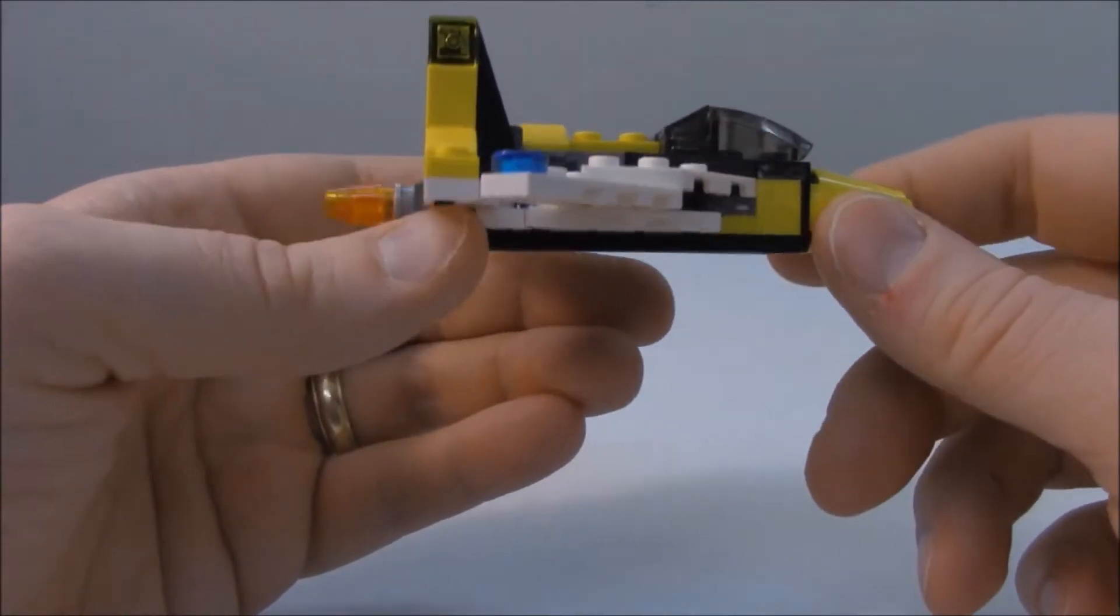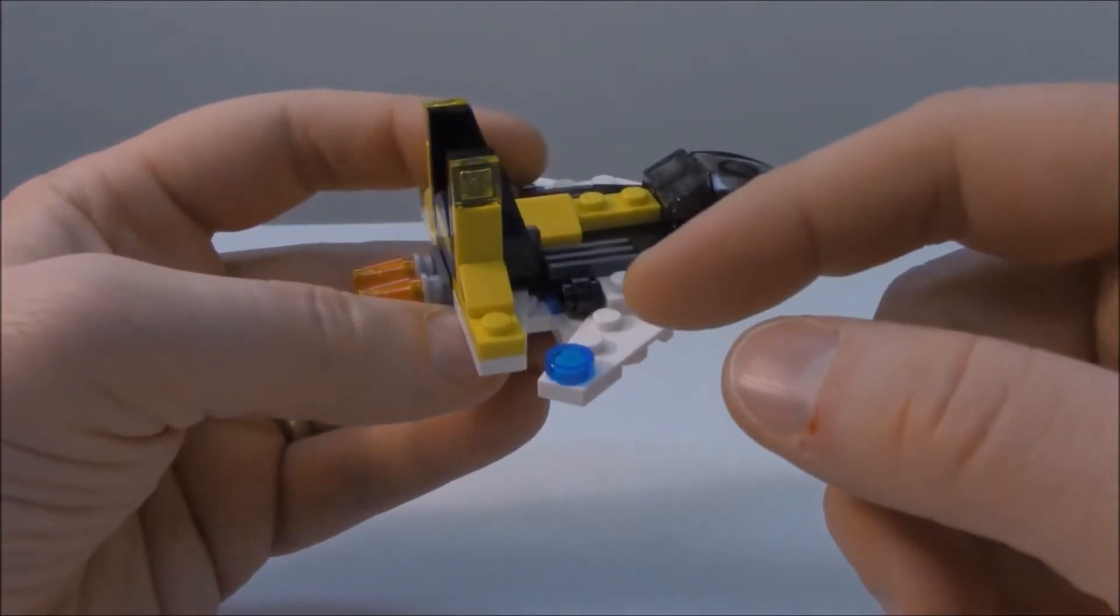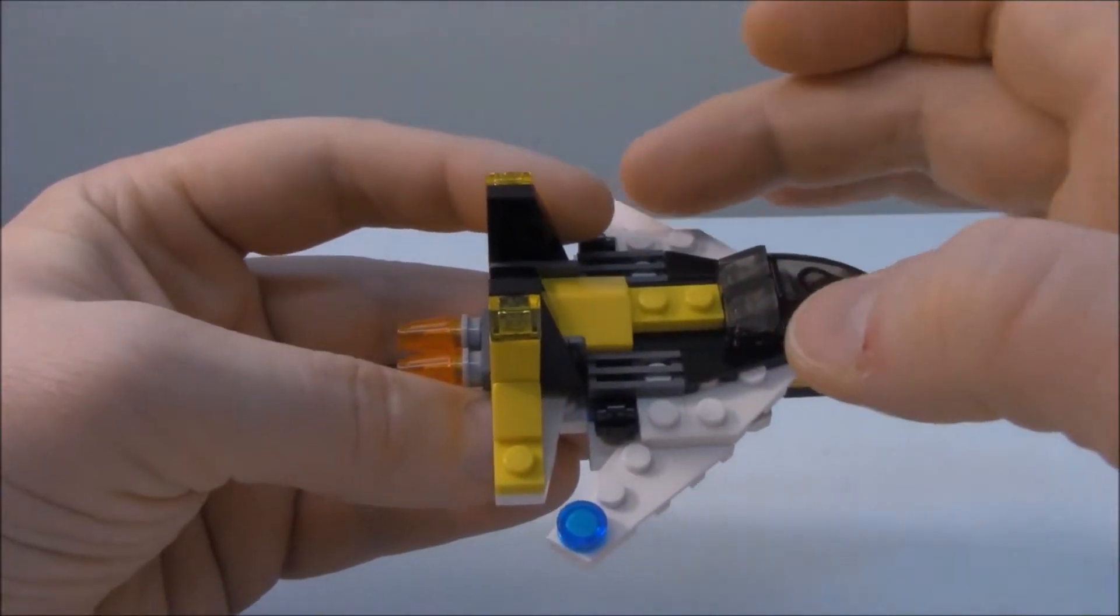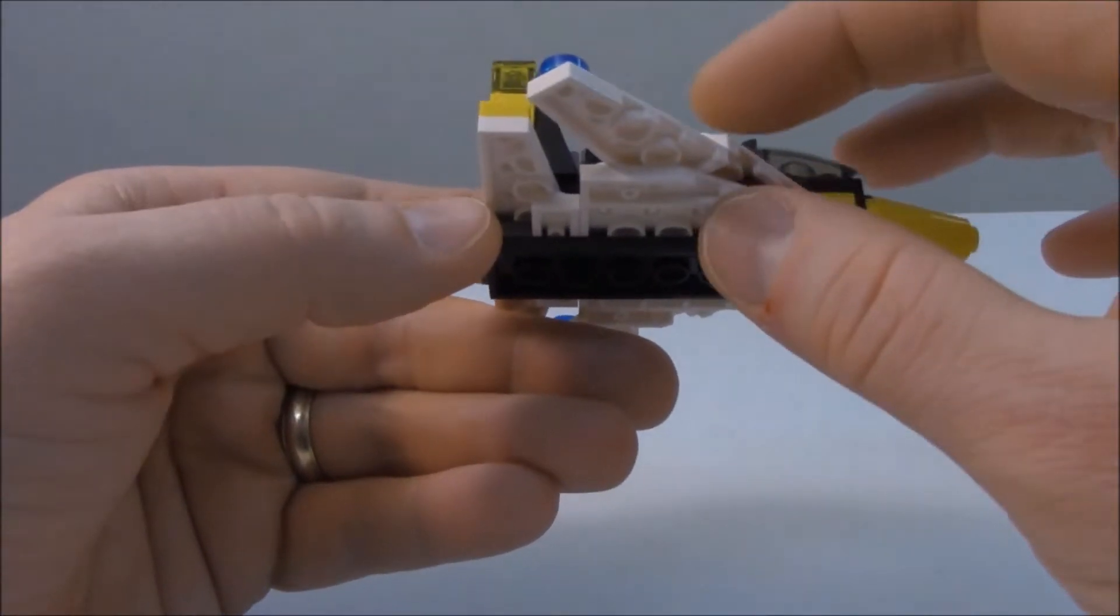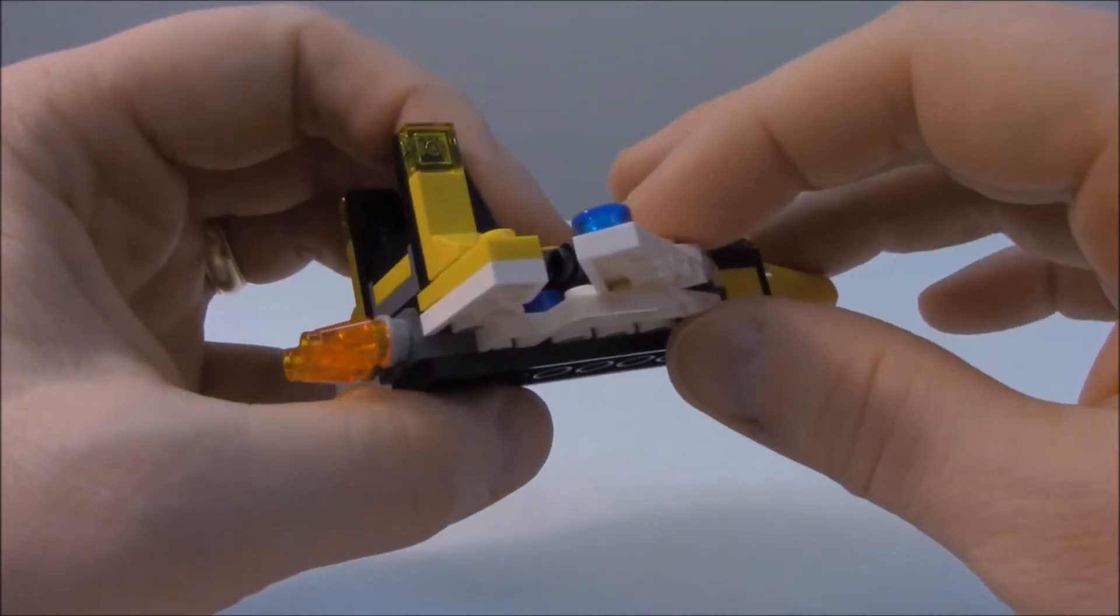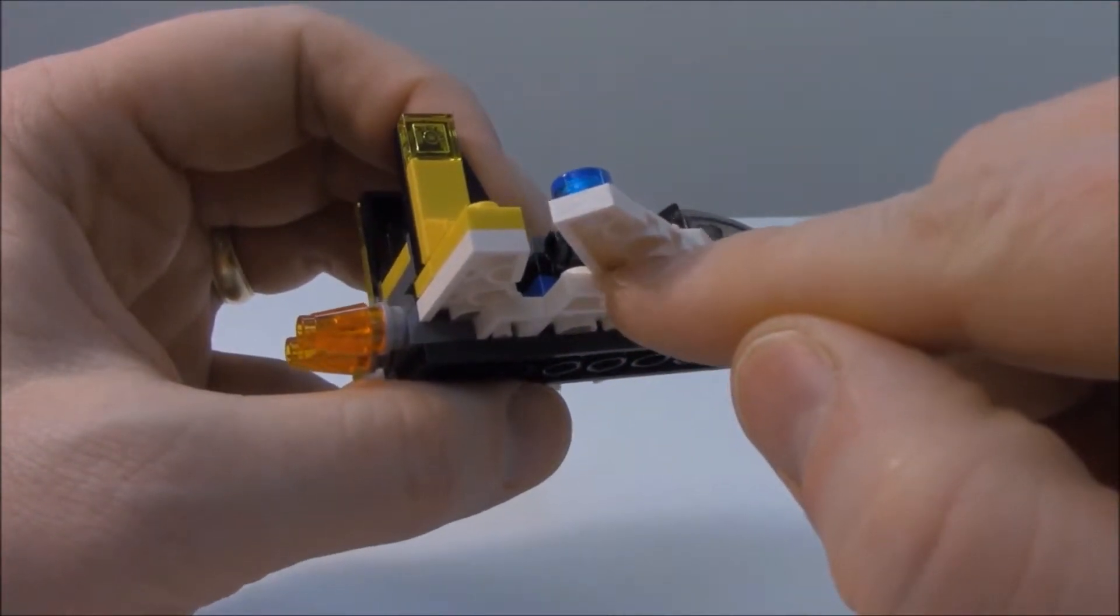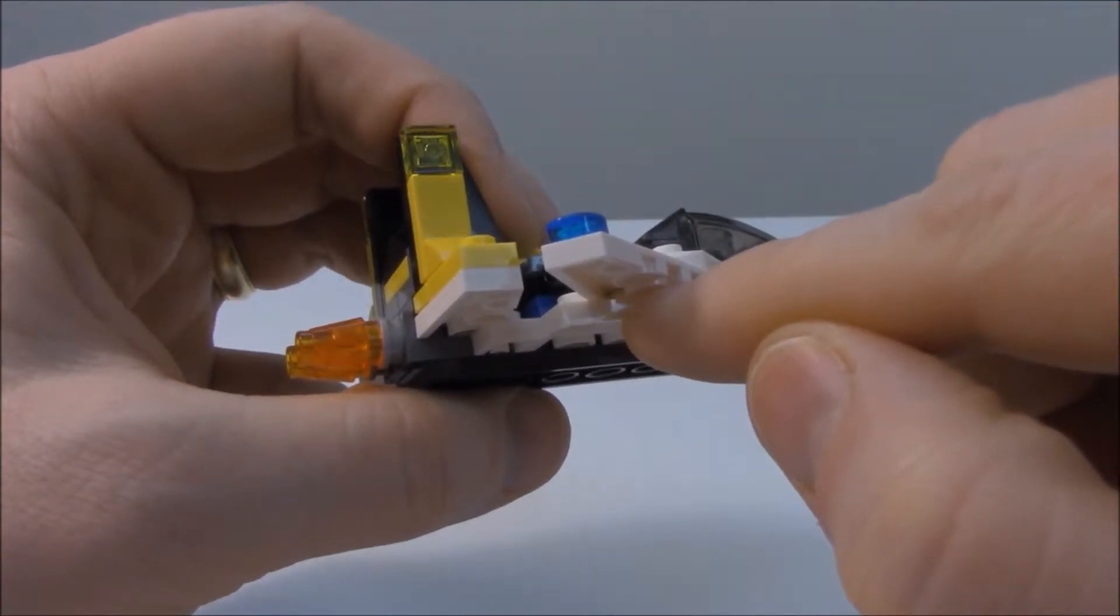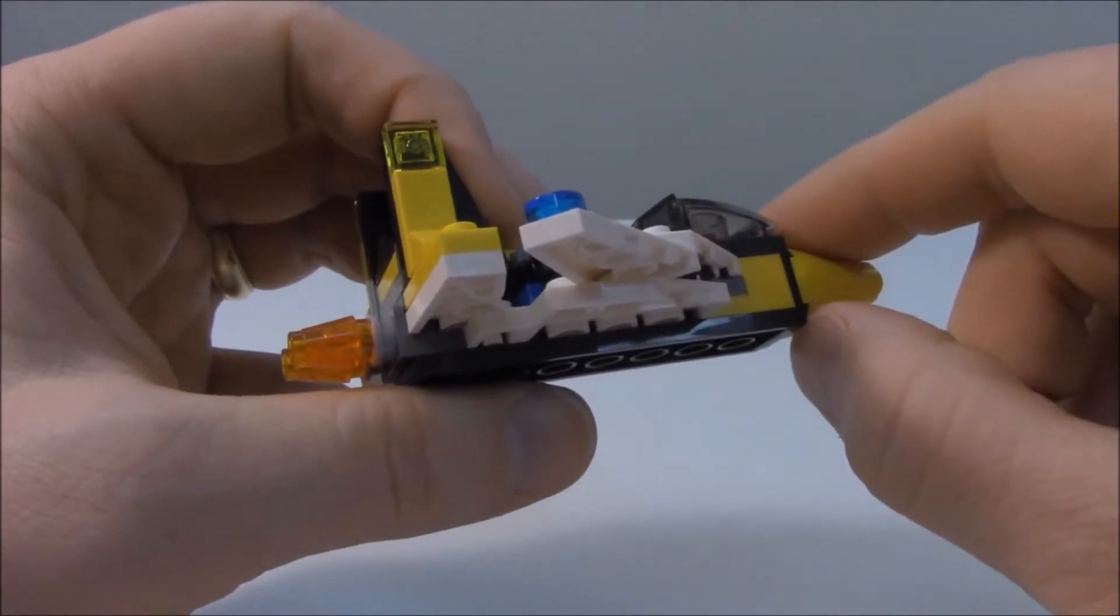The cool thing about this plane is that these two little triangle pieces are just sandwiched in between the top and the bottom, and you really can't see it very well. But if you can look down in there, there's a single stud that is in the corner of this triangle piece.